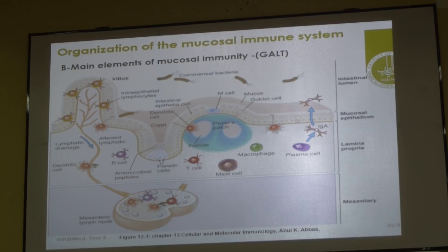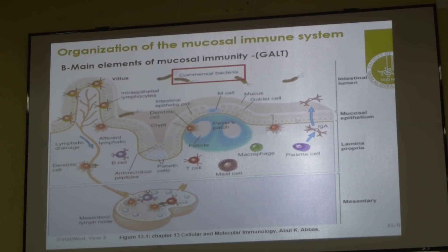This is one organized GALT. And then the M cells — I will go through all of them one by one. First thing: commensal bacteria. How many different commensal bacteria are there in the GIT? Five hundred different species have been identified so far. So your immune system has to be very well tolerant to those five hundred different species. Then goblet cells — they secrete the mucus which is a protective layer. Villi are mainly responsible for absorption of nutrients.